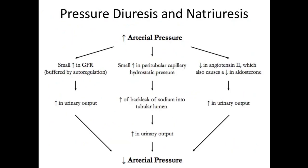Now regarding pressure diuresis and pressure natriuresis and the role of angiotensin 2 in these mechanisms: whenever there is an increase in arterial pressure, it has mainly three effects. Whenever blood pressure rises, there will be a small increase in GFR — small because it is opposed or buffered by autoregulation.